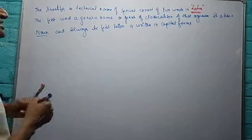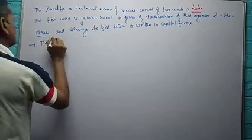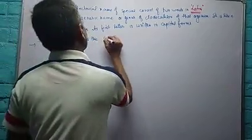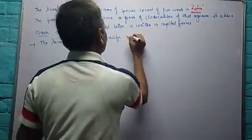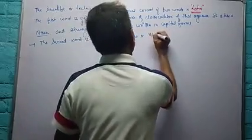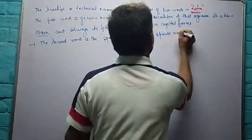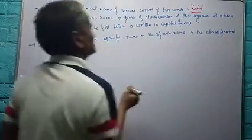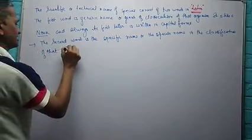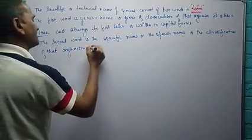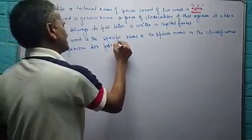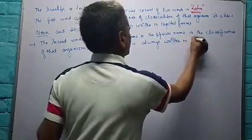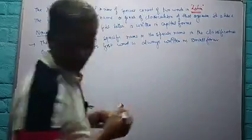The second word is the specific name or species name in the classification of that organism. Its first letter is always written in small form.